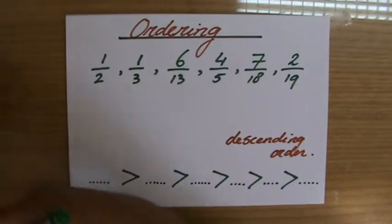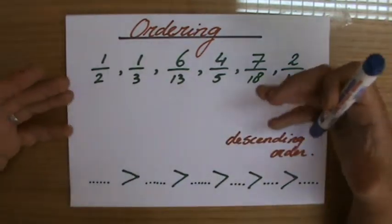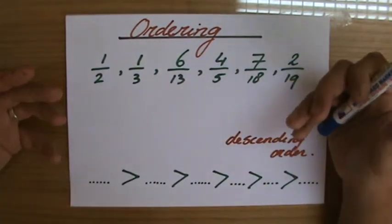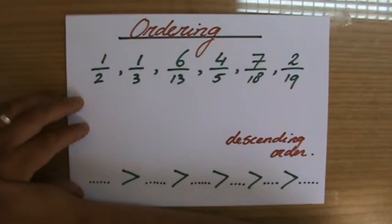You write them all down either as a decimal or perhaps a percentage or as a fraction but with the same denominator. My experience is most of you prefer decimals, so let's write everything down as a decimal.